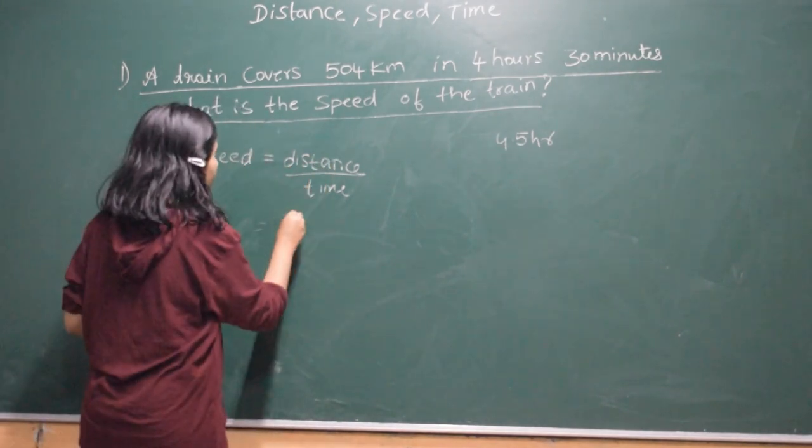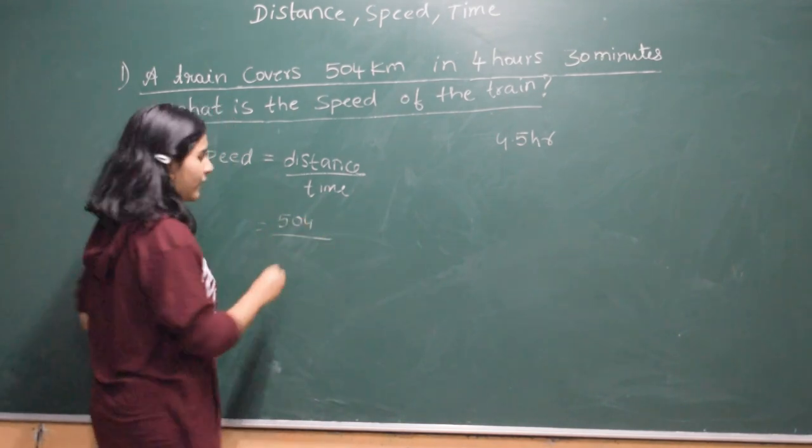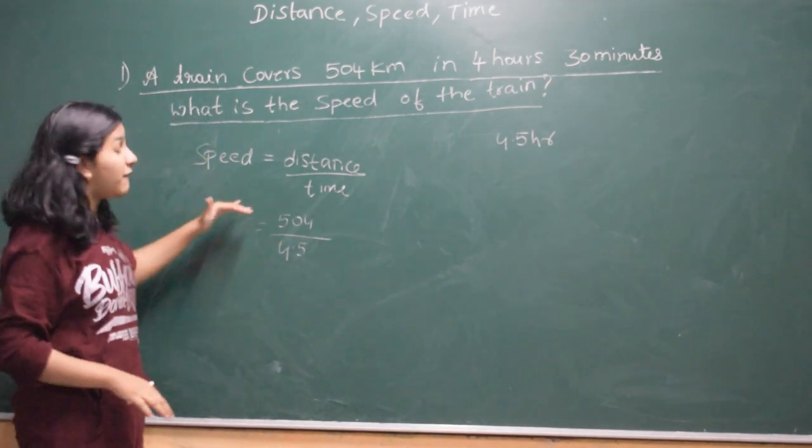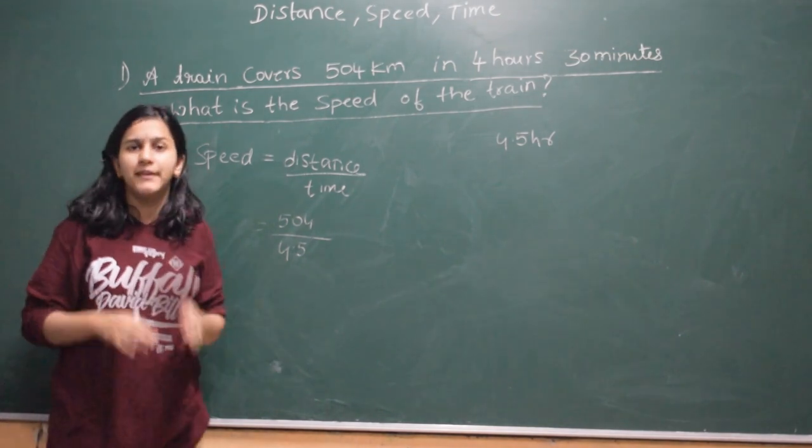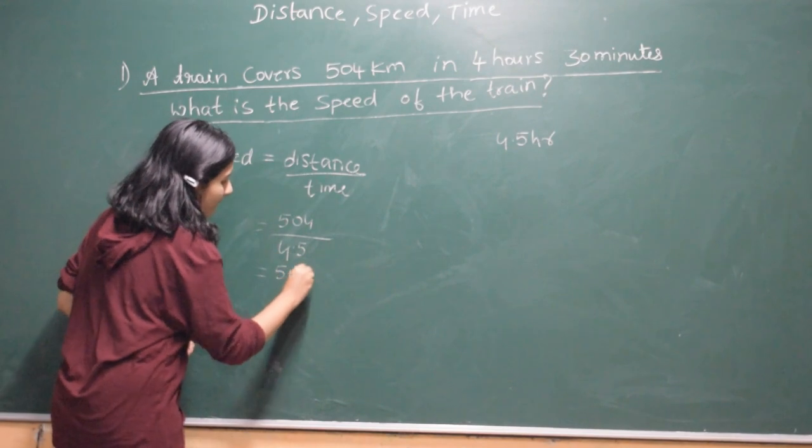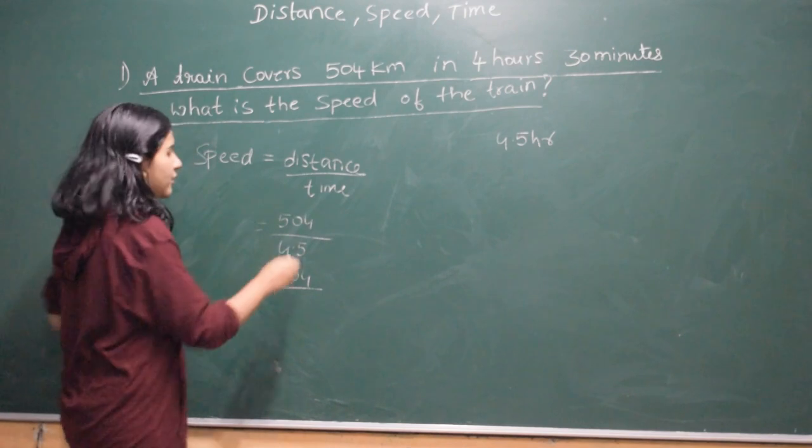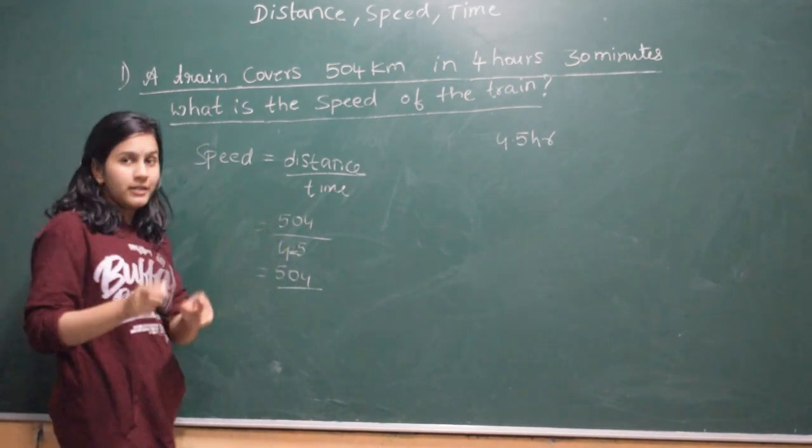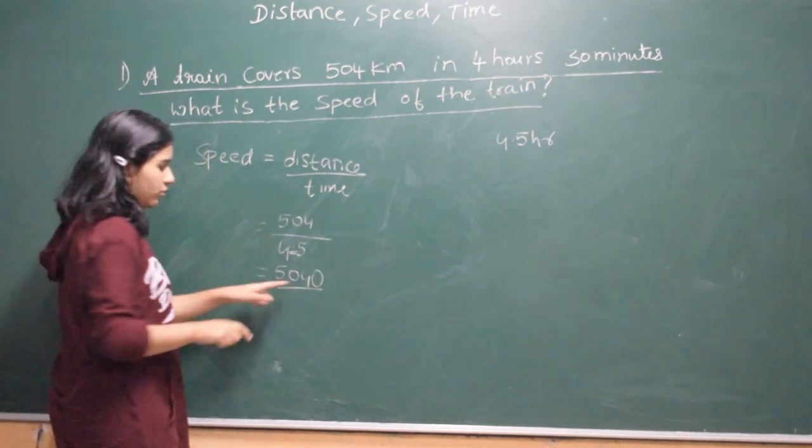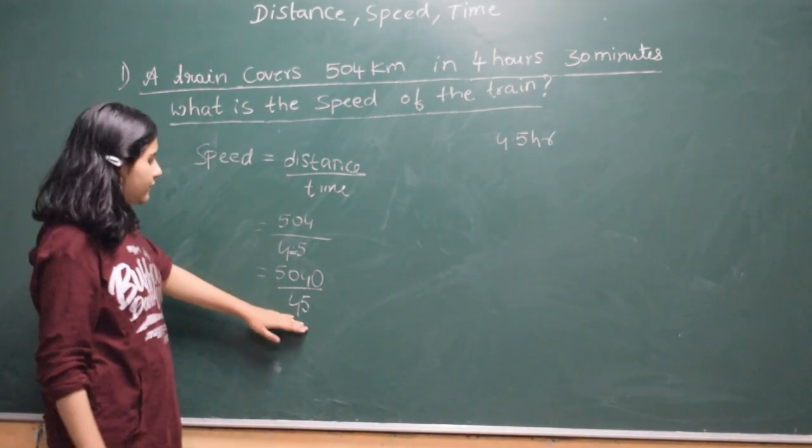Distance is 504 kilometers and time as we found is 4.5 hours. Now you may think dividing 504 by 4.5 is difficult. It's not at all difficult. You should convert this 4.5 into 45. You can remove the decimal point, but you should add 0 to the numerator. So we are converting this into 10th place.